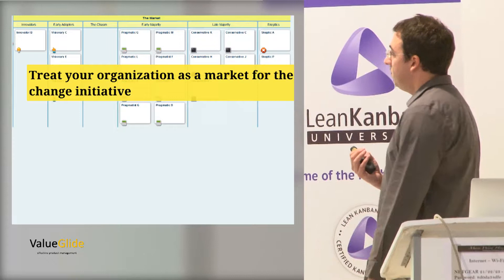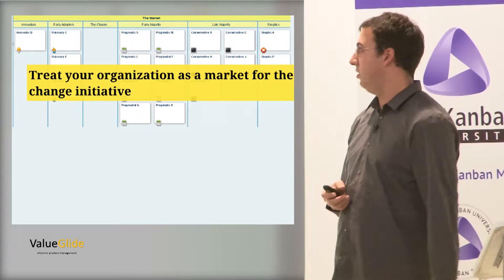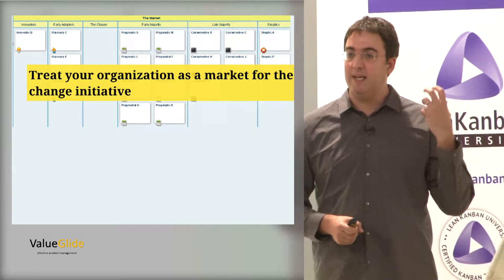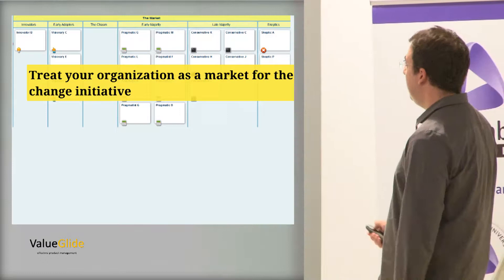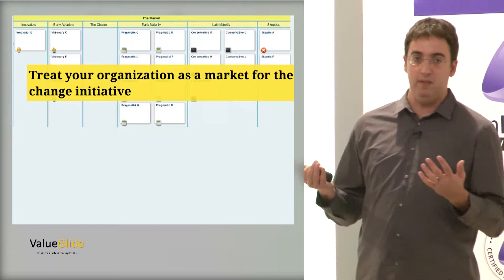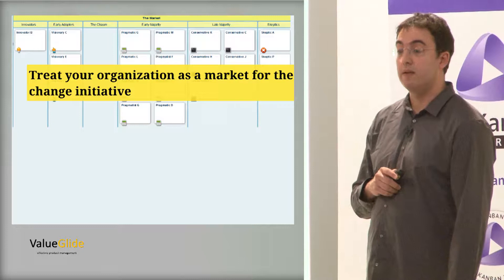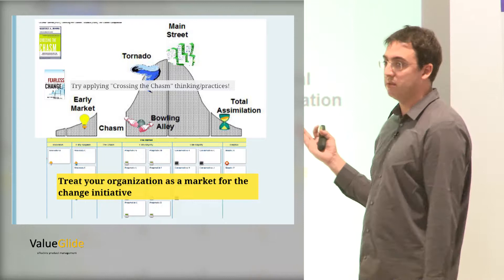And now if we look at the organization, basically what we see is we have some innovators, the people that will take the idea no matter, just because it's a new idea, they don't care about the business results. They will have the visionaries, which see a big reason to do it, and they will do it even though it's not really a complete solution yet. And there are pragmatics who will only follow other people, conservatives who will only follow if there are a lot of other people, and the skeptics that will keep struggling for a long time. Does this look familiar to anyone? Crossing the chasm, right?